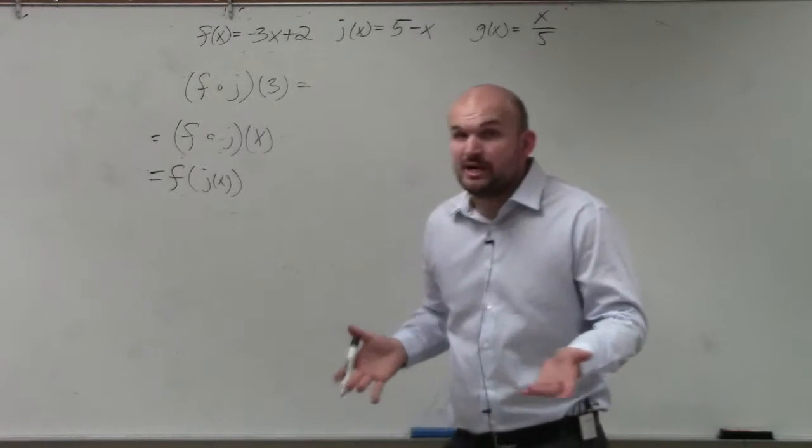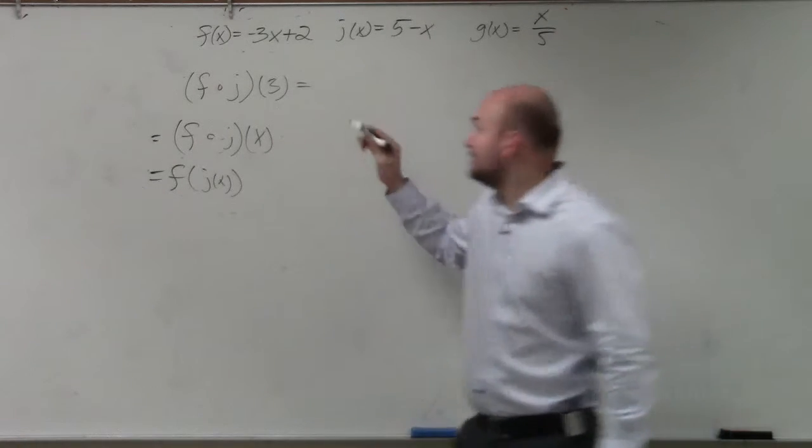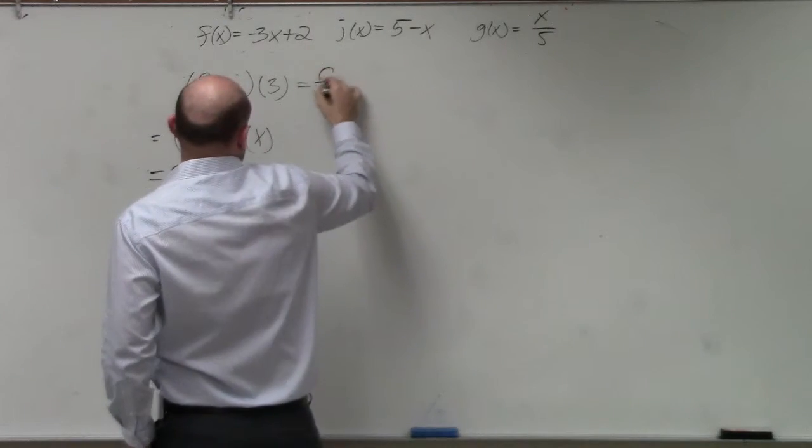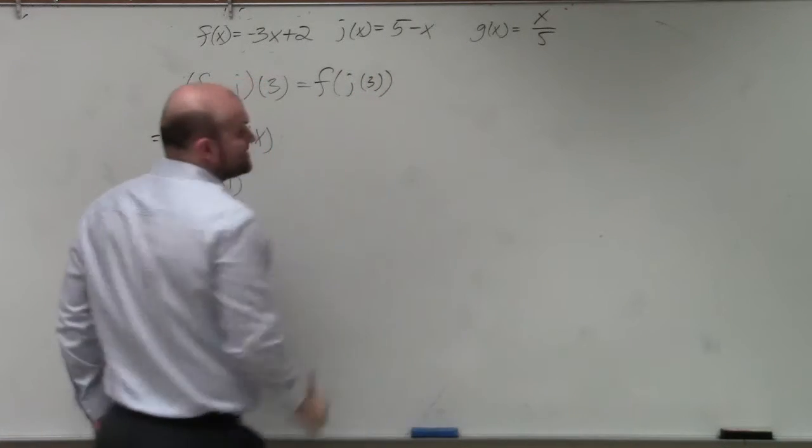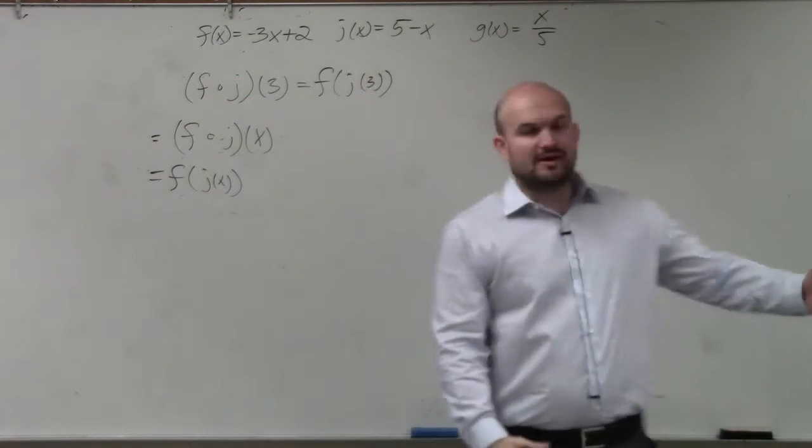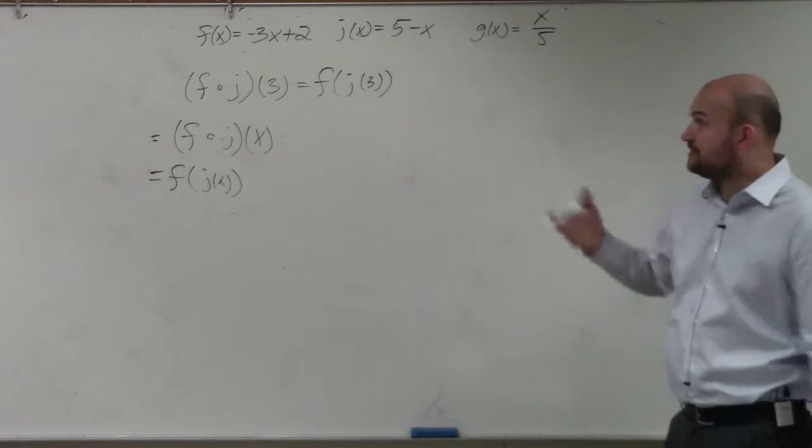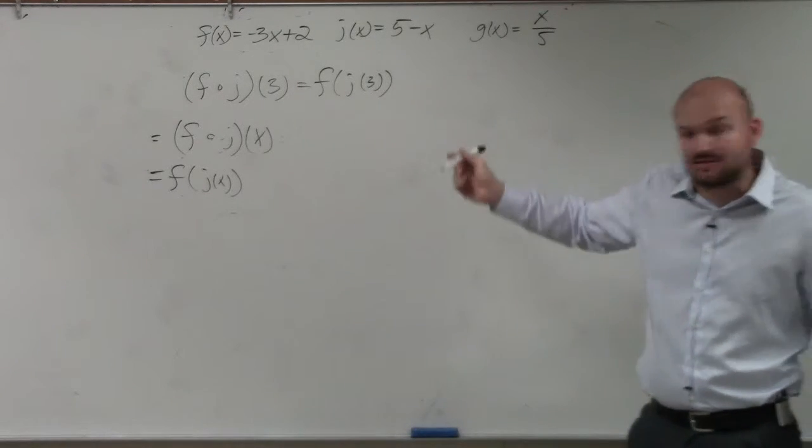So now instead of x being our input variable, we have 3. This is equivalent to f of j of 3 as our input value. So do we have a j of x? Yes. If we have j of x, can we figure out what j of 3 is? Yes.